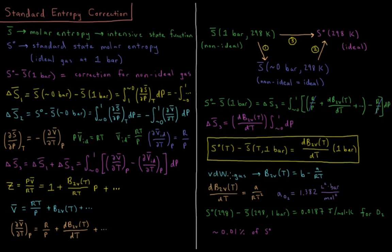For the Van der Waals equation of state, the second virial coefficient equals B (the molecular size parameter) minus A (the molecular attraction parameter) over RT. Its derivative with respect to temperature is A over RT squared. For O2, the attraction parameter A equals 1.382 liter-squared-bar per mole-squared. The non-ideal entropy correction for O2 at 298 Kelvin works out to 0.0187 joules per mole-kelvin, or approximately 0.01% of the standard entropy.